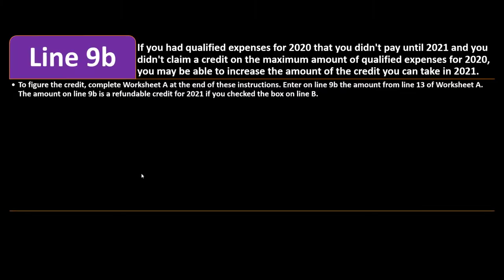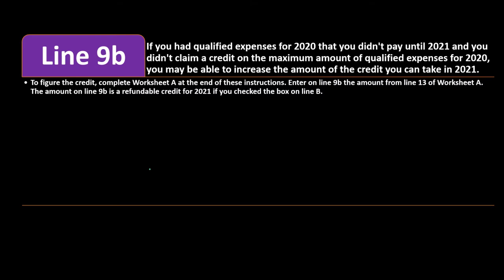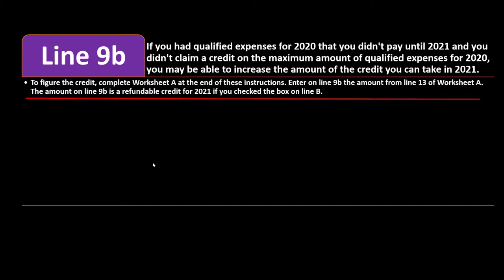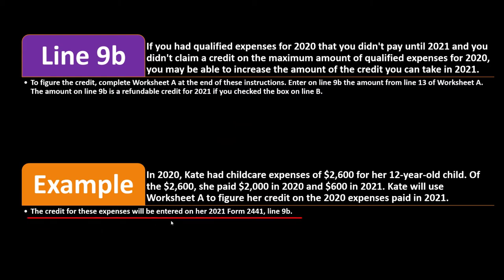Line 9B: if you had qualified expenses for 2020 that you didn't pay until 2021, and you didn't claim a credit on the maximum amount of qualified expenses for 2020, you may be able to increase the amount of the credit you can take in 2021. To figure that credit, complete Worksheet A at the end of the instructions. Enter on line 9B the amount from line 13 of Worksheet A. The amount on line 9B is a refundable credit for 2021 if you check the box on line B.